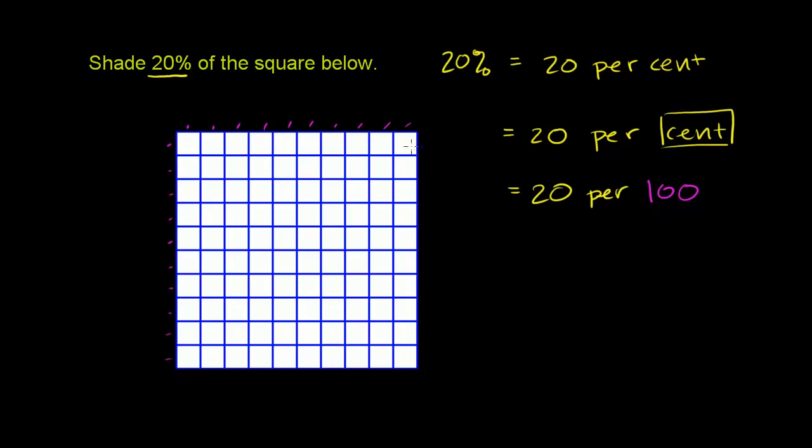So this is a 10 by 10 square, so it has 100 squares. Another way to say it is that this larger square is broken up into 100 smaller squares. It's already broken up into 100, so we'll just literally shade in 20 squares.